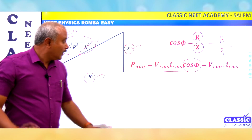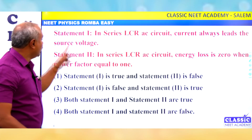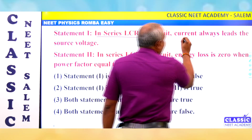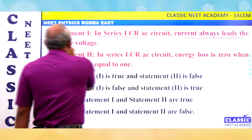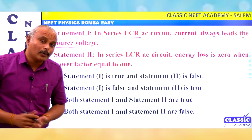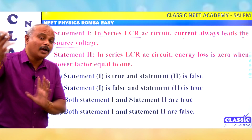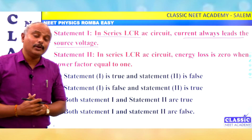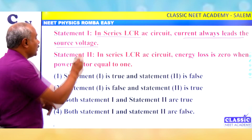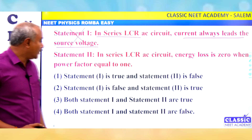Now let's look at an assertion-reasoning question. Statement 1: In a series LCR AC circuit, current always leads the source voltage. If capacitance dominates, current leads the source voltage. If inductance dominates, current lags the source voltage. So 'always leads' is incorrect.